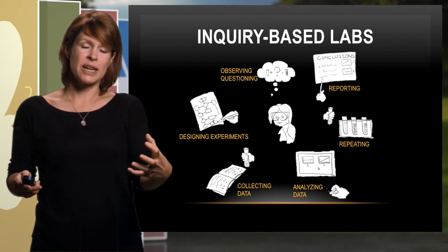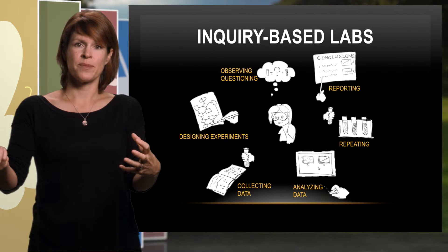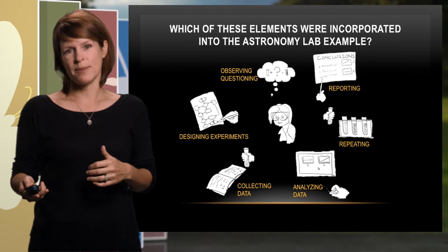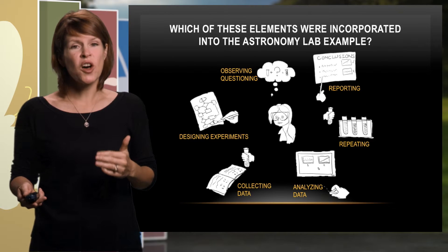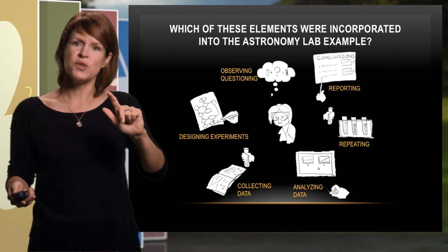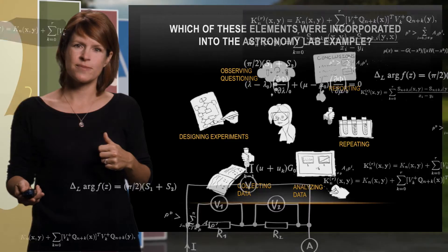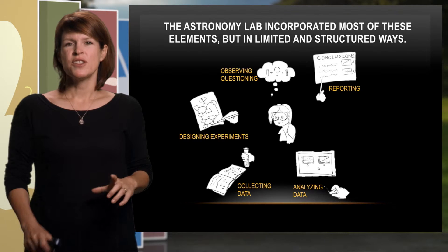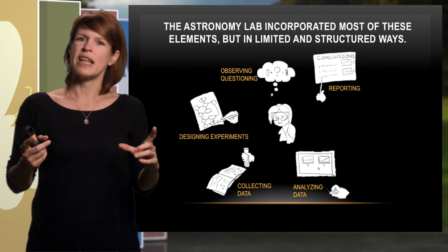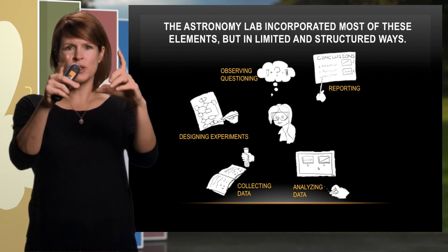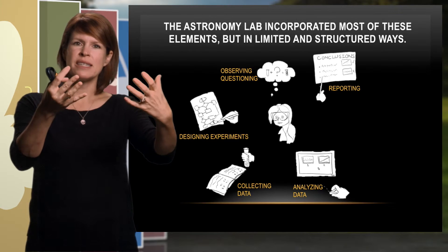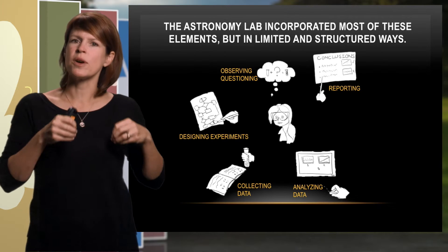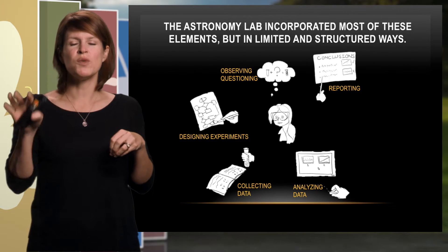Let's think about which elements of inquiry were present in the two examples we looked at earlier: the astronomy lab led by Erica Grinstrom and the biological sciences lab led by Charles Sissom. The astronomy lab incorporated most of these elements but in limited and structured ways. Erica Grinstrom structured her lab so that students had the opportunity to practice essentially all elements — observing, questioning, designing experiments, and collecting and analyzing data — and she gradually withdrew support so that by the end of the semester students could do all of these on their own.